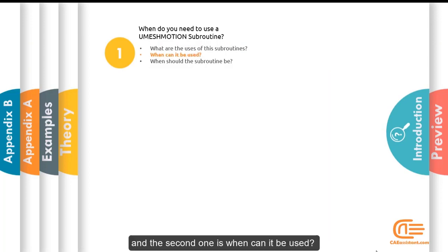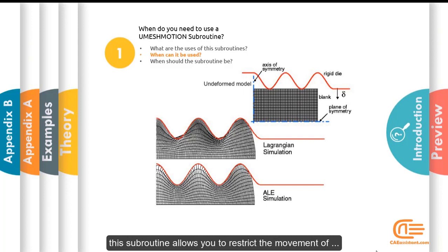And the second one is when can it be used. This subroutine allows you to restrict the movement of the mesh while using the ALE technique. For example, you can see example about ALE simulation in comparison to Lagrangian simulation. You can see in this simulation that the distortion of these elements in ALE simulation is less than Lagrangian simulation and it's very helpful for some problem with large deformation.